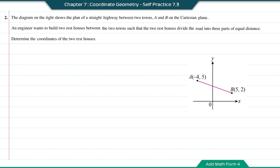Here let us divide the line segment AB into 3 equal parts. Let's say this is the position of rest house number 1, and I label this as C. And this will be the position of rest house 2.